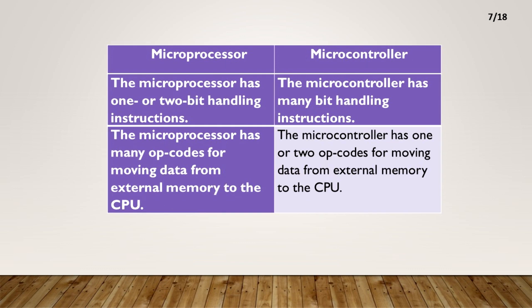The microprocessor has one or two bit handling instructions. The microcontroller has many bit handling instructions. The microprocessor has many operator codes for moving data from external memory to the CPU. The microcontroller has one or two operator codes for moving data from external memory to the CPU.